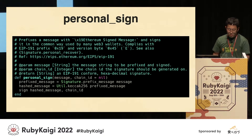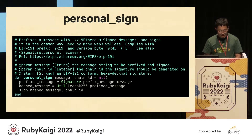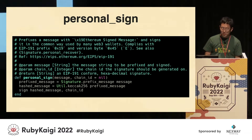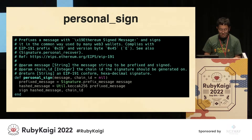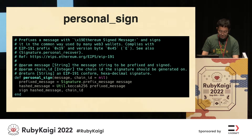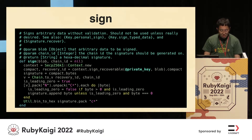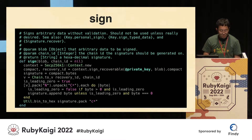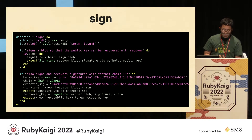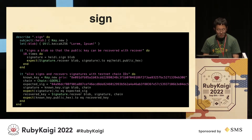In eth.rb, to sign an application you can use the method personal_sign. You may have been asked to sign on an application when you access it with MetaMask, for example. For signature, personal_sign should be prefixed to the message. The hash value is calculated, and the sign method returns a hexadecimal signature. Using this, the owner of the private key can sign the transaction. This is a test case for the sign method. The public key can be recovered with the recover method.